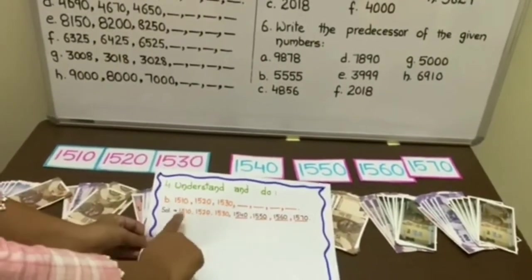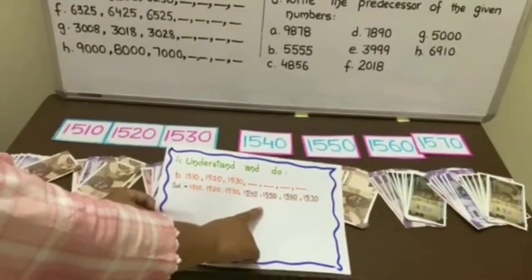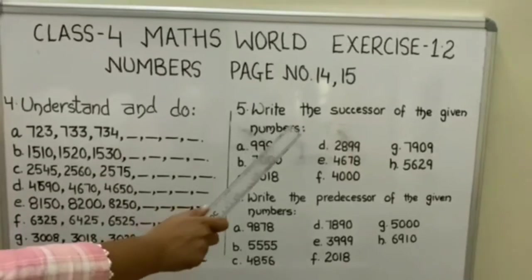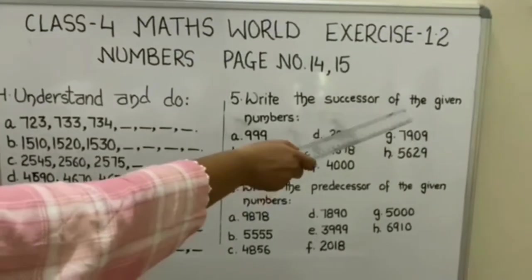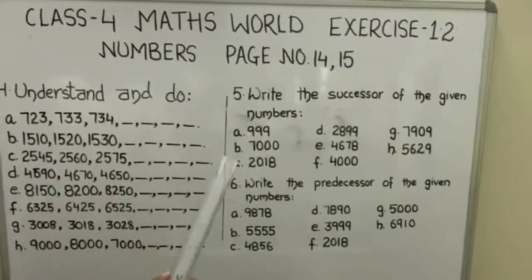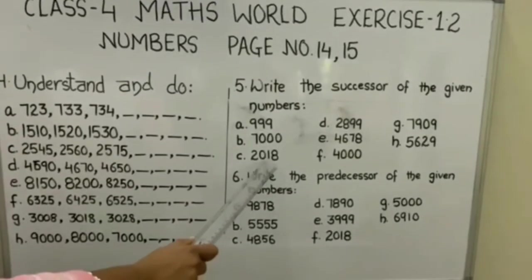Question number 5, write the successor of the given numbers. We will solve part C. It is 2018.